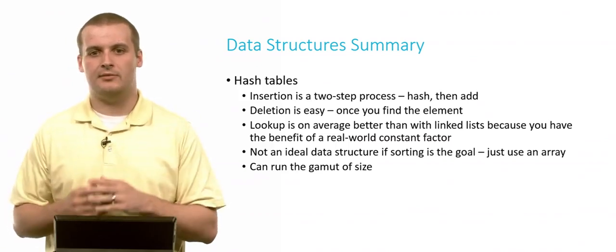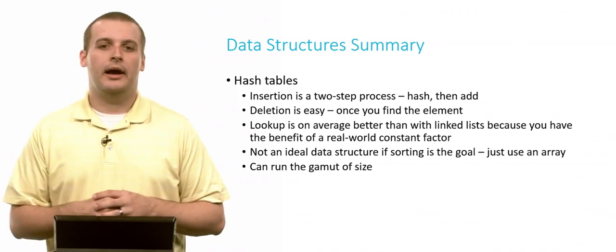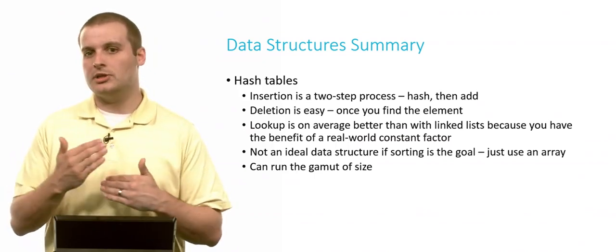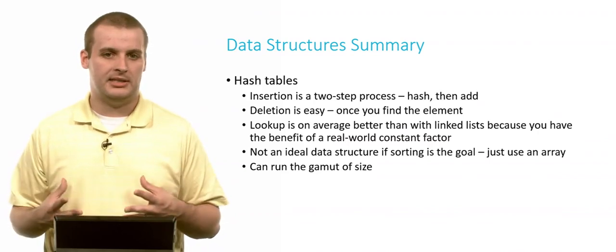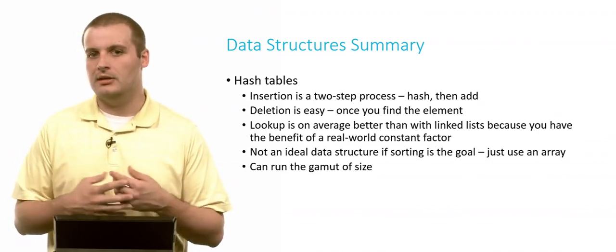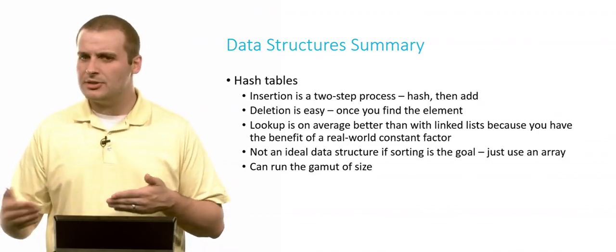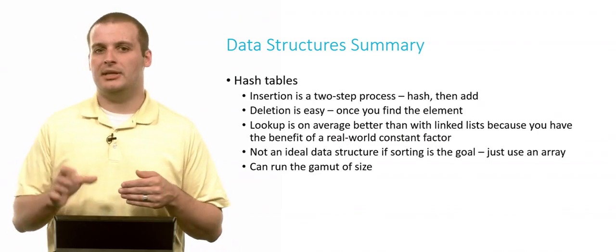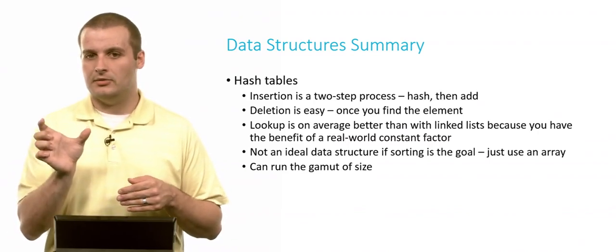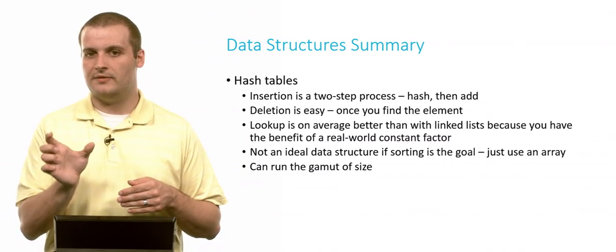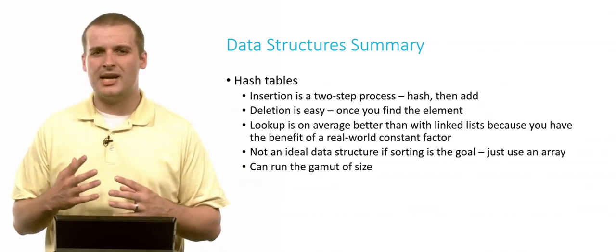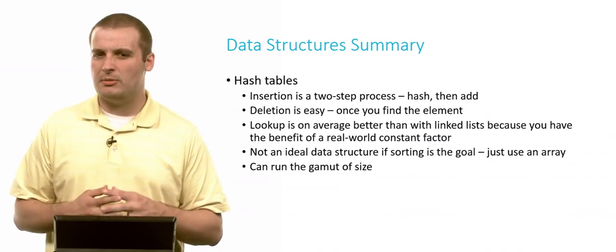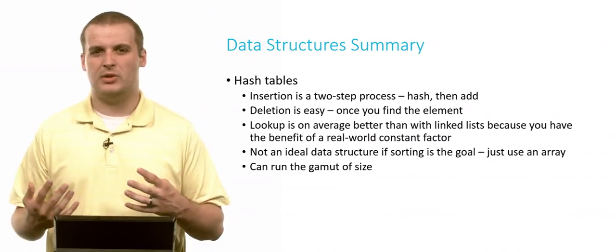You have n linked lists instead of one linked list of size n. And so this real-world constant factor, which we generally don't talk about in time complexity, it does actually make a difference here. So lookup is still linear search if you're using chaining, but the length of the list you're searching through is very, very short by comparison. Again, if sorting is kind of your goal here, hash table is probably not the right way to go. Just use an array if sorting is really important to you.